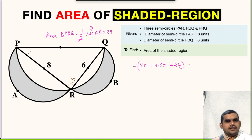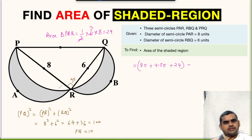In triangle PRQ using Pythagoras theorem, PQ² is equal to PR² plus RB². PR is 8, so 8² plus 6², which is 64 plus 36 equals 100. So PQ will be 10 units.